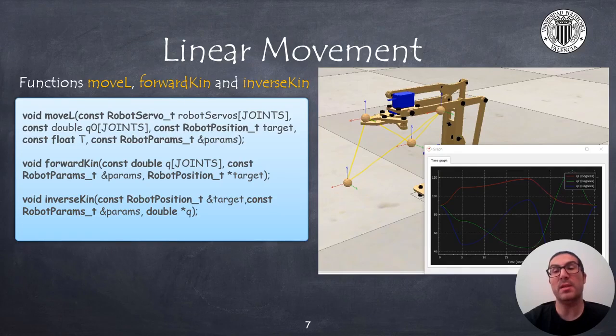For each of the trajectory points in the Cartesian space, then we need to compute the equivalent joint configuration using the inverse kinematic of the robot, and then move the servos to the corresponding positions.